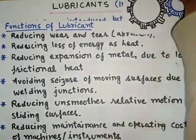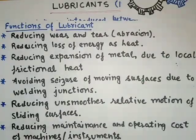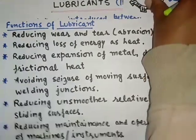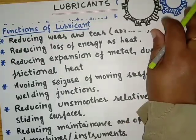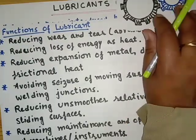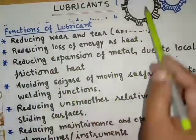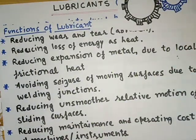The first function of a lubricant is reducing surface deformation, wear and tear — also known as reducing surface abrasion. When a lubricant is introduced between two metal surfaces, the rough patches in the metal surfaces do not interlock with each other, therefore avoiding wear and tear.